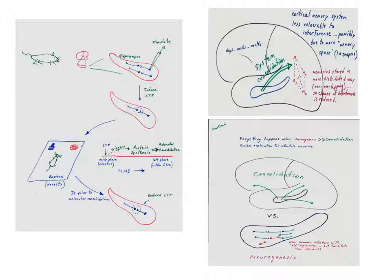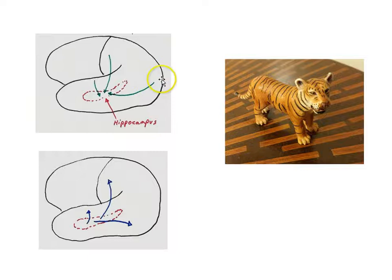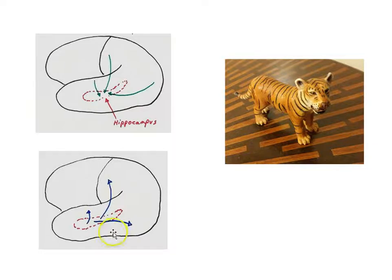The two prior reasons for system consolidation had to do with interference in the hippocampus. The third has to do with semantic memory. Consider this scenario: you go to the zoo and meet a tiger for the first time. Your visual, auditory, and touch areas send information that converges on the hippocampus, LTP happens at the relevant synapses, and over time you consolidate that experience. That consolidated event is an episode — an episodic memory. But there's other information stored there beyond just your experience of the event.